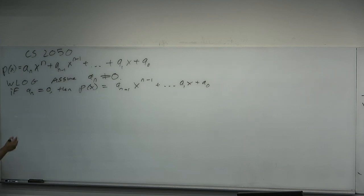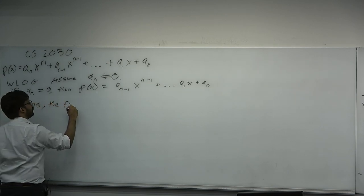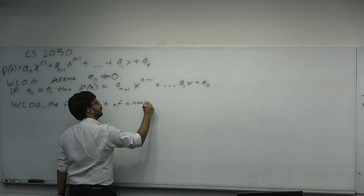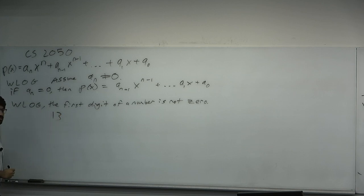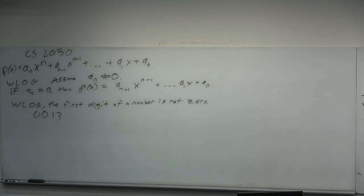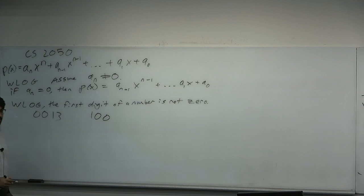Similarly, if you're considering the digits of a number, without loss of generality the first digit is not 0. Why? You could write 13 as 0013, but we never actually do that. Every number has leading zeros technically, but if you're proving something about the representation of a number, it's obvious to assume the first digit is not 0 — that's how we do math. WLOG is sometimes like a 'give me a break' — I'm not going to consider leading zeros because we don't do that. Other digits can be 0, like 100.